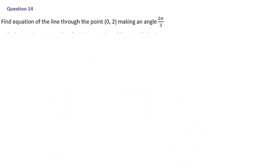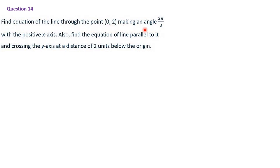Next, question number 14: Find the equation of the line through (0,2) making an angle of 2π/3 with the positive x-axis. Also find the equation of the line parallel to it crossing the y-axis 2 units below the origin. For the first part, the slope = tan(2π/3) = tan(120°) = tan(180°−60°) = −tan(60°) = −√3.